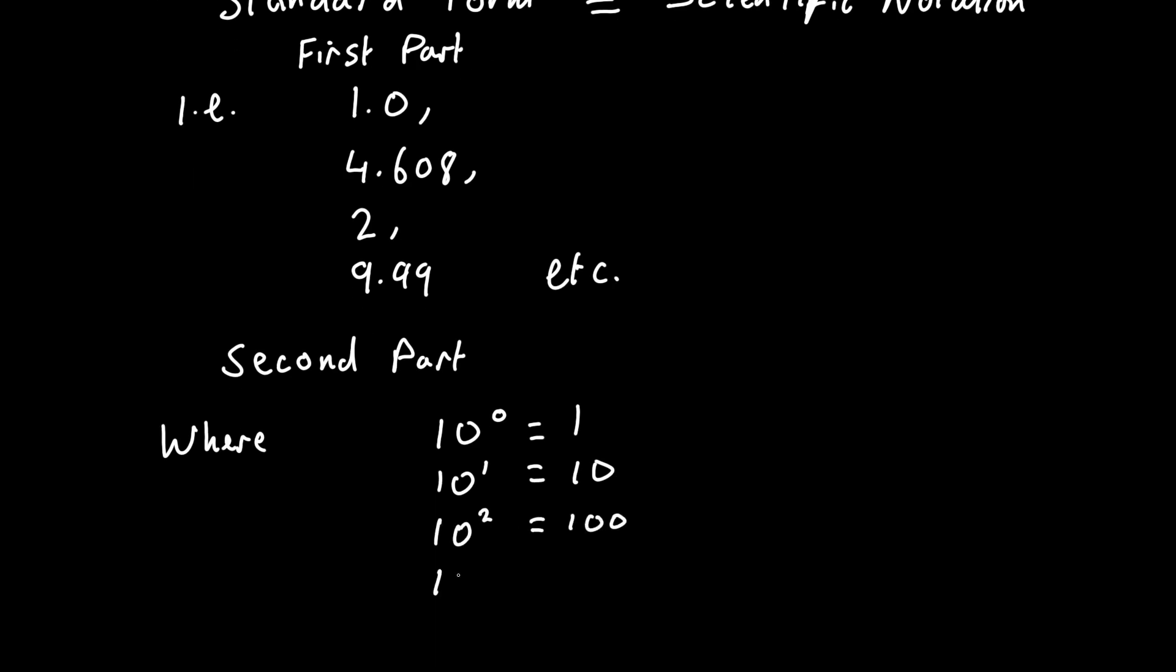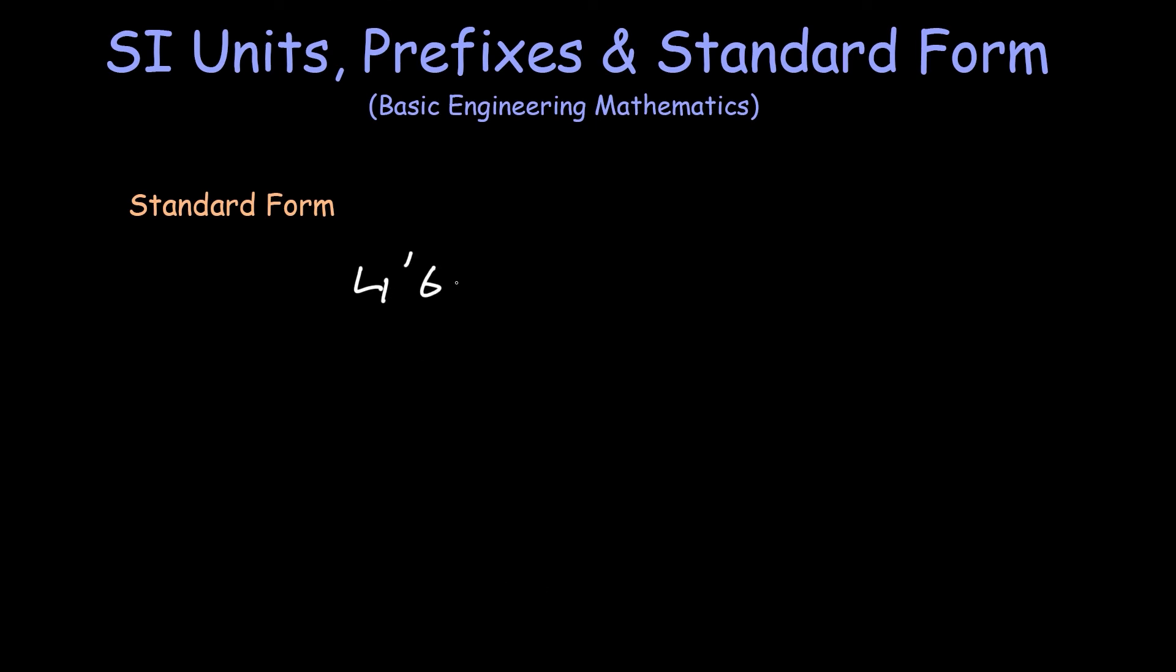Here are a couple of examples. So if we have 4600 we can write this in standard form, and this would be expressed as 4.6 times 10 to the power of 3. And it's to the power of 3 because we have to move the decimal point three spaces. Or we could have a very small number which is 5.6 times 10 to the power of minus 5. So here you'll notice that the decimal point shifts to the right 5 times.